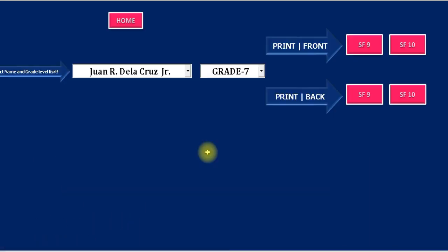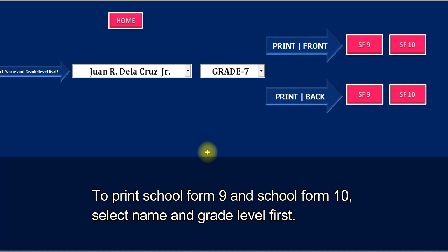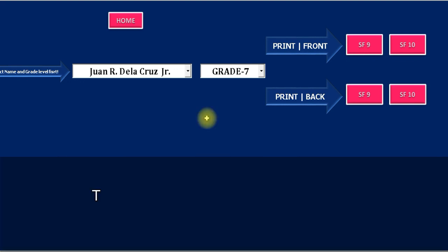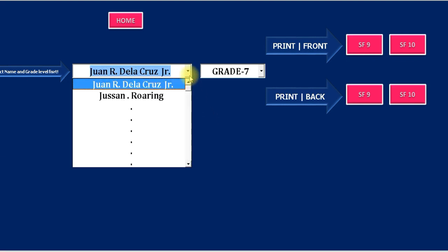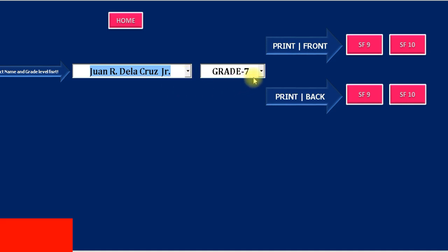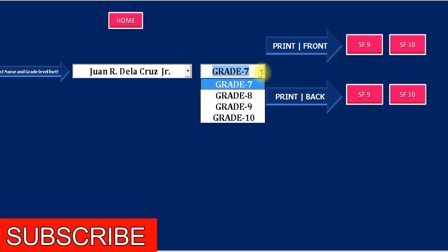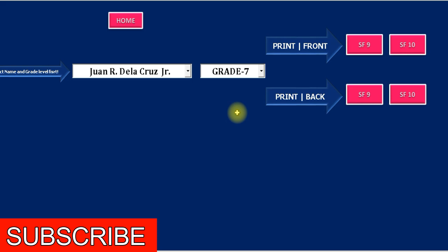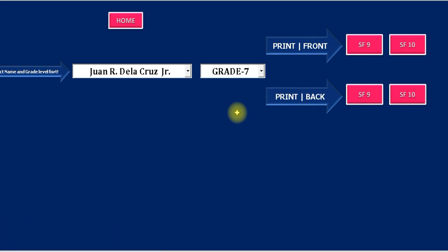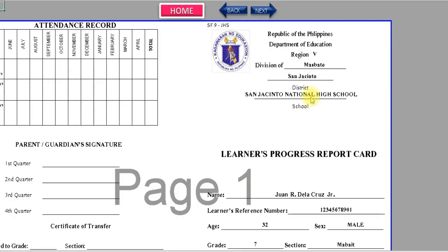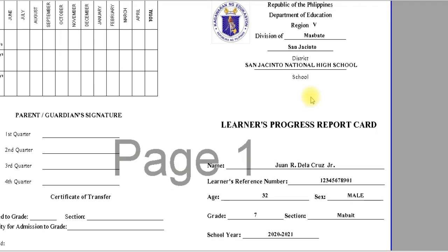To print School Form 9 and School Form 10, select the name and grade level first. This is the front page of School Form 9.